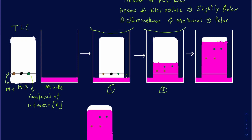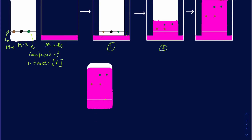As time passes, the mobile phase moves up to a certain point. You want to make sure it doesn't go over the top of the TLC plate, otherwise you'll have difficulty marking where the solvent front ended. Once it reaches near the top, with a little space left, take out the TLC plate. The maximum distance the solvent has traveled is called the solvent front, and wherever your baseline was is the starting point. These two positions are very important.